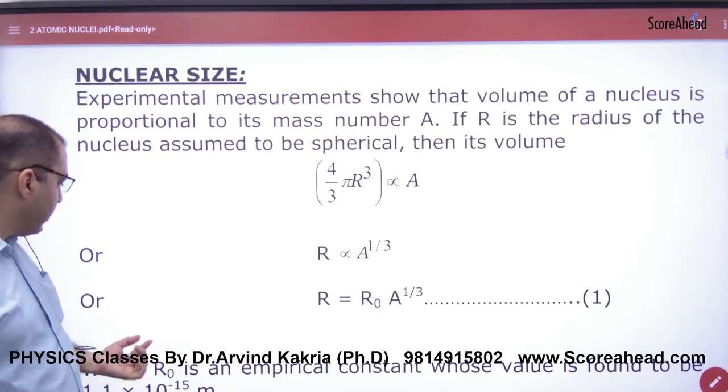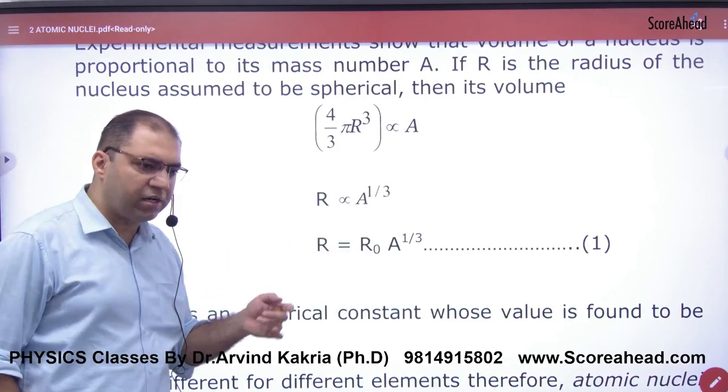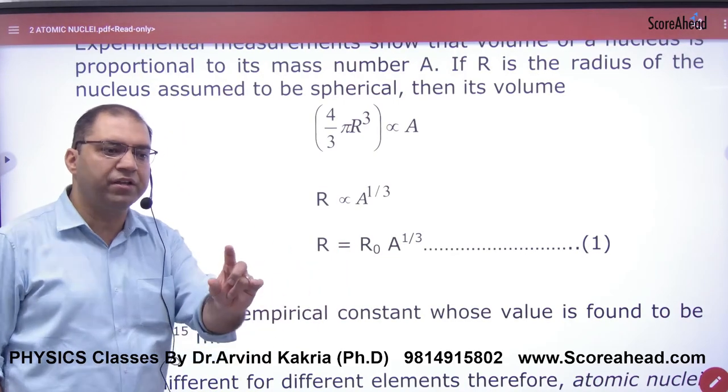And a constant is R₀ whose value is 1.1 into 10 to power minus 15. So let's mark this formula. If work will come, calculate the radius of the nucleus.